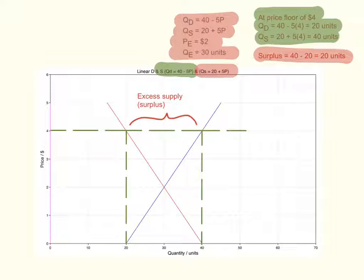This is shown in the diagram as the difference between the two points on the demand and supply curves after the price floor is imposed.